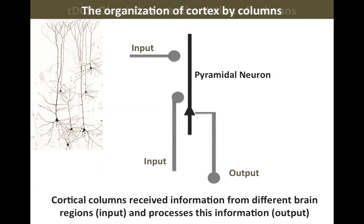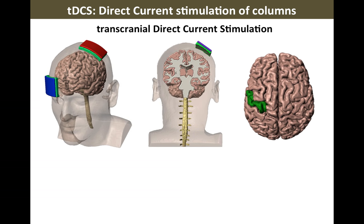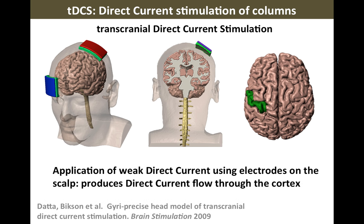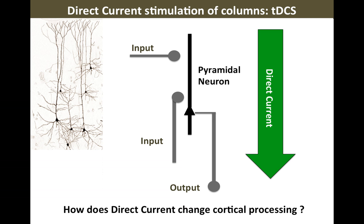Very simplistically, think of the brain as being made of cortical columns. These cortical columns receive input from other brain regions or from the environment, process that information, and make a decision whether or not they're going to fire. We can think of tDCS as direct current stimulation of columns, because we're passing current through the brain, through the cortex, and as a result we're passing current through these columns as they process information. We can therefore ask how direct current stimulation changes information processing and how it might be functionally targeted.